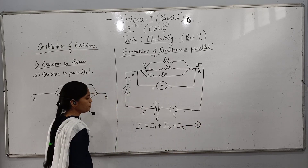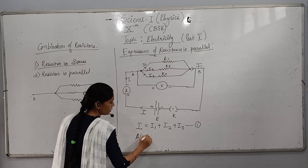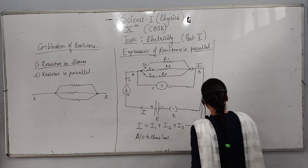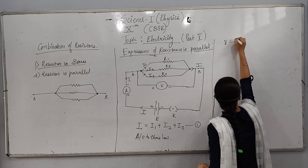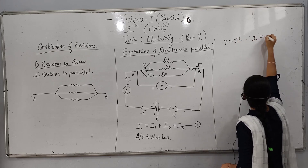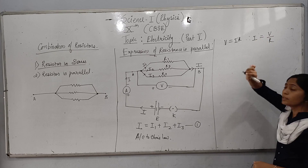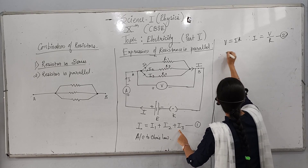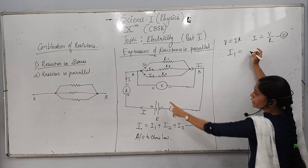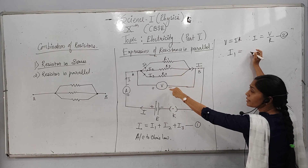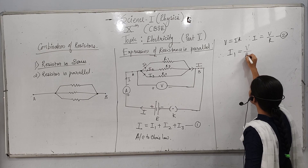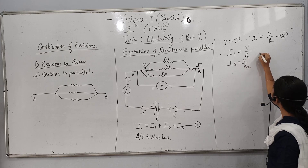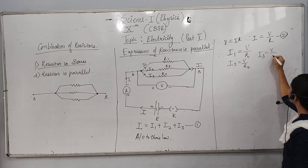According to Ohm's law, V is equal to I into R, therefore I is equal to V upon R. This is equation number 2. We want I1, I2, and I3. Since the potential drop is the same across all three resistors, I1 is equal to V upon R1, I2 is equal to V upon R2, and I3 is equal to V upon R3.